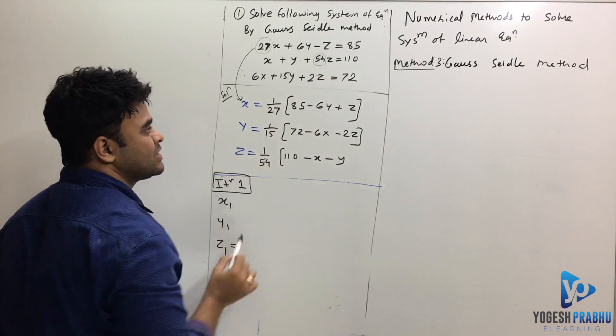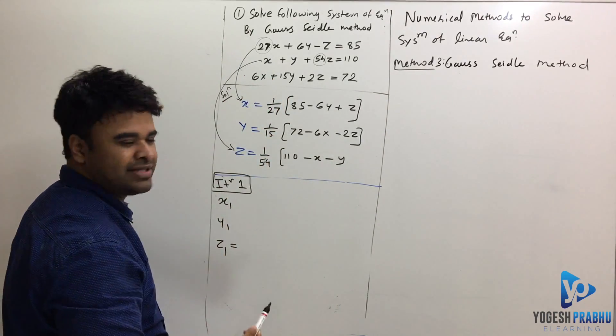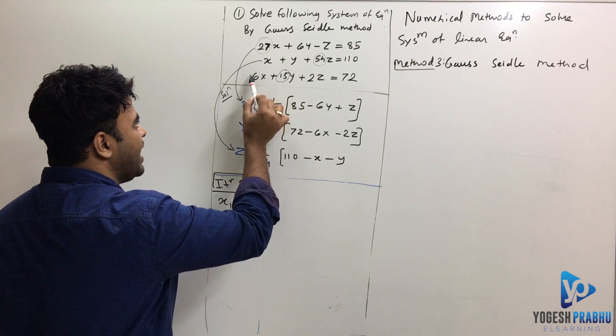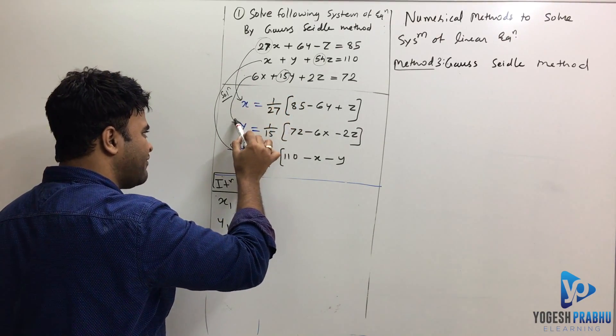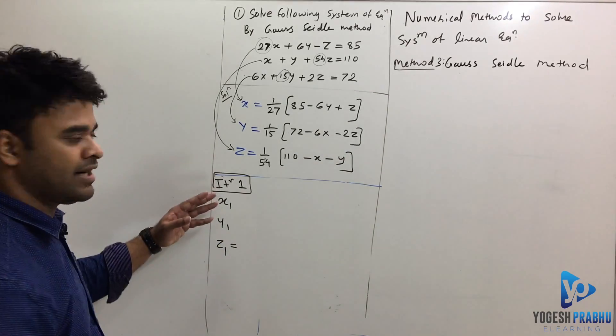So I took that as x and now if you see the second one, the z has got the highest coefficient, so I actually used this equation to find z and not y. Just remember that point, makes your life easier and then I found y from the third equation. So that's exactly how we did it in Jacobi's method, so same thing here as well.